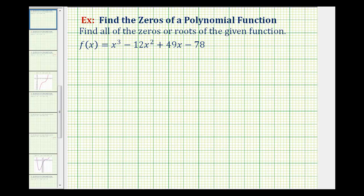We want to find all zeros or roots of the given degree three polynomial function. We start by finding the rational zeros, and to do this we make a list of all possible rational zeros. These are formed by the ratio of the factors of the constant term — in this case negative 78 — to the factors of the leading coefficient, which in this case is just positive one.